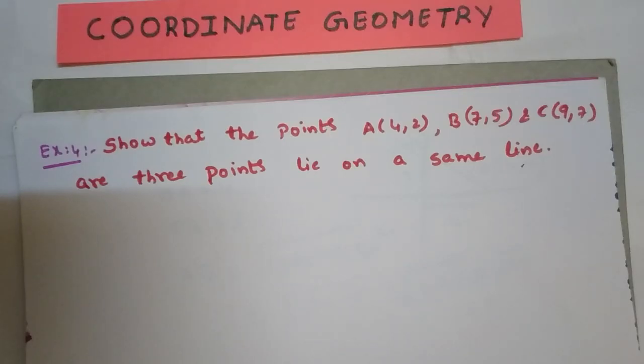Welcome to ARCA Foundation classes. Coordinate Geometry Example number 4: Show that the points A(4,2), B(7,5), and C(9,7) are three points that lie on the same line.